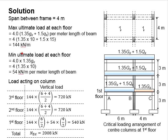As for the minimum load, it will only constitute the permanent actions. With that, the minimum UDL will be 54 kN per meter.